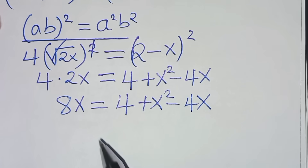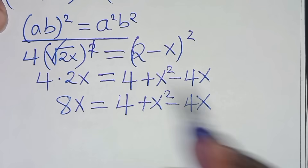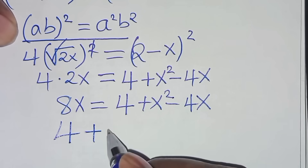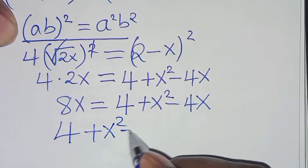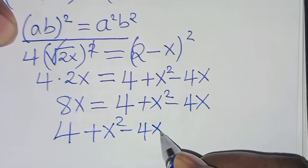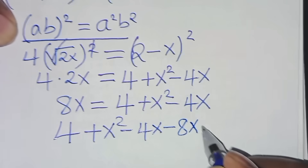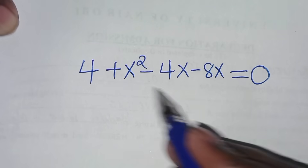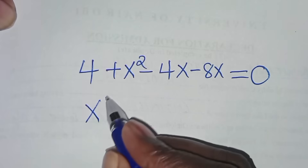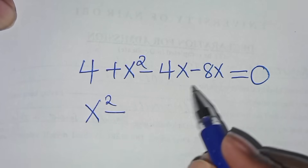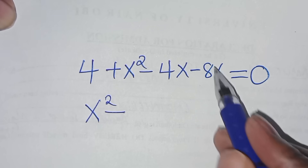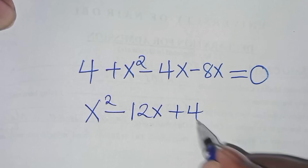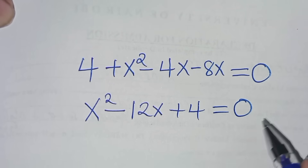From here let's take 8x to the right-hand side so that we have 4 plus x squared minus 4x minus 8x equals 0. So we have x squared minus 12x plus 4 equals 0.